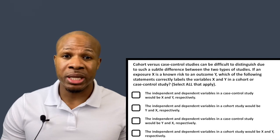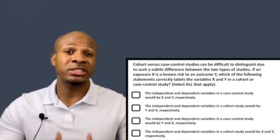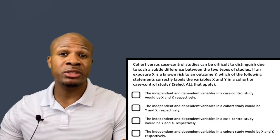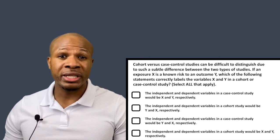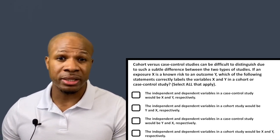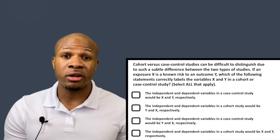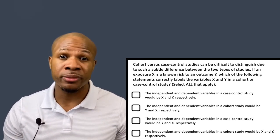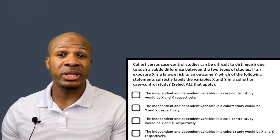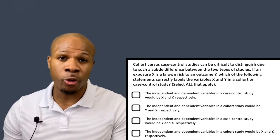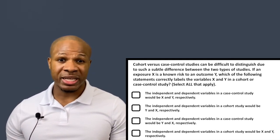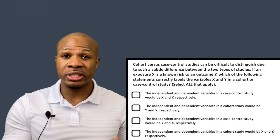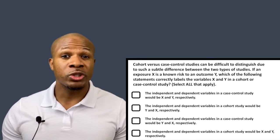In a case-control study, you select patients who have outcome Y and patients who don't. Using the smoking-cancer example, you select patients who have cancer and those who don't, then work backwards to see who was exposed to smoking. So whether the patient smoked becomes the output — the dependent variable. In a cohort study, the independent variable is whether the patient smoked or not — that's the exposure you select for — and then you observe whether cancer was higher in one group versus the other.